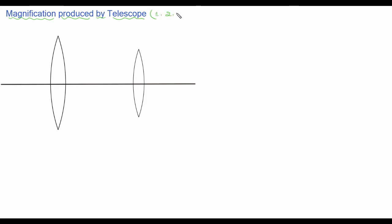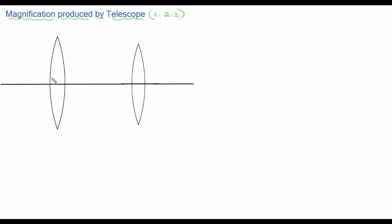Under this category, 1, 2, or 3 marks questions can be asked. They can ask what is a telescope, or what is tube length, or ask you to write the expression for magnification and the ray diagram representing the final image. In the telescope also, we use two convex lenses — one is the objective lens and another is the eyepiece lens.